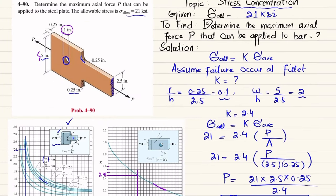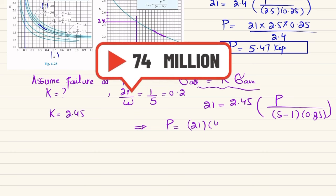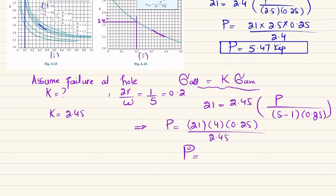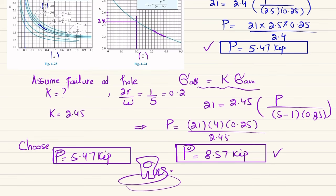Applying the formula: 21 = 2.45 × (P / area). Since there is a hole in the plate, the net area is (5 − 1) × 0.25 = 4 × 0.25. So P = (21 × 4 × 0.25) / 2.45, which gives P = 8.75 kips. Now we have two values: 5.47 kips based on the fillet, and 8.75 kips based on the hole. We choose P = 5.47 kips as the smallest, safer value.